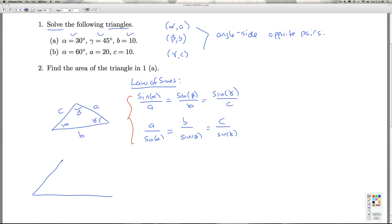So let's try to sketch out the triangle we're given. So that's 30 degrees, that's 45 degrees, and B is 10.